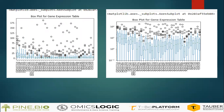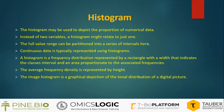As we can see on the left side, it is a normal scale, and on the right side, we have the logarithmic scale. There are certain small black circles that we can see — those are known as outliers, and these are values which are beyond the range of the dataset, that is beyond the highest and lowest values. Histogram: a histogram may be used to depict the proportion of numerical data. Instead of two variables, a histogram might relate to just one. The full range can be partitioned into a series of intervals. Continuous data is typically represented using histograms. The average frequency density is represented by the height, and the image histogram is a graphical depiction of the tonal distribution of a digital picture.